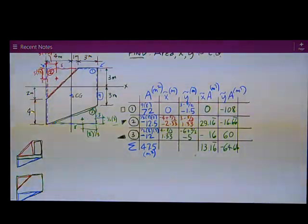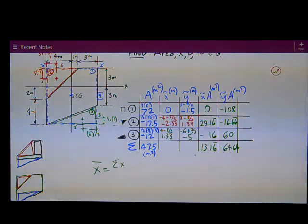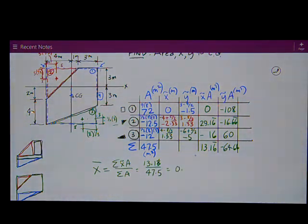Once I've got those values I'm home free, because I can just figure x bar as the sum of the x tilde A's divided by the sum of the A's, the areas, and that is equal to positive, it's 13.16 divided by 47.5. That's equal to 0.277 meters. I'll plot that here in a second, make sure it makes sense with the way I kind of eyeballed it.